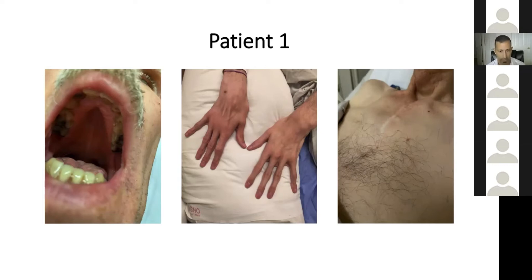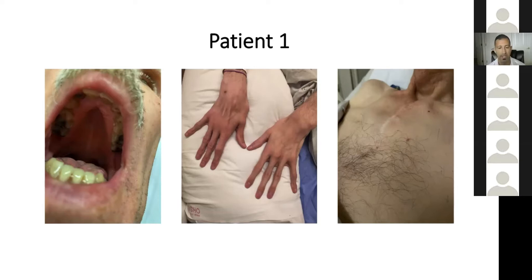Let's look at the first patient. There are three pictures here — one of the patient's mouth, one of his hands, and one of his chest wall. Feel free to use the chat to tell us what findings are present in this case, and how you can unify them to make a diagnosis.